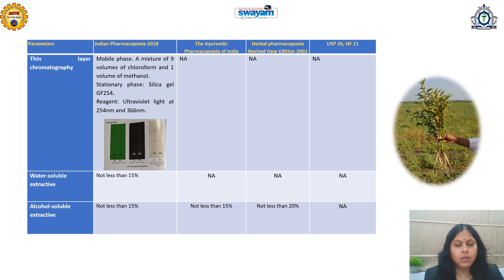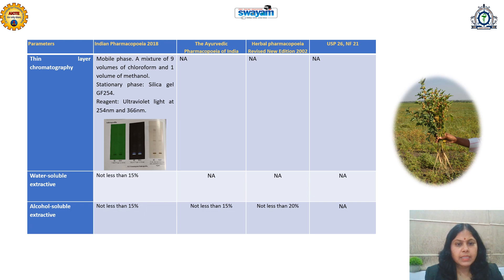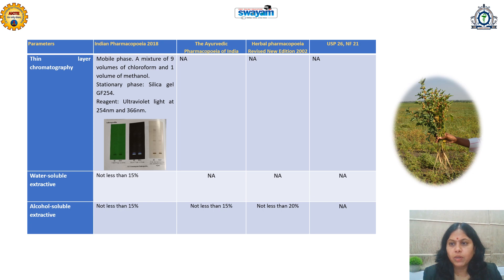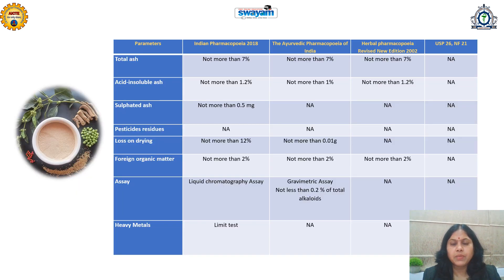The next parameter is water-soluble extractive value, which is mentioned only in the Indian Pharmacopeia and not in the Ayurvedic, Herbal, USP, or British Pharmacopeia. Alcohol-soluble extractive value — which should not be less than 15% — is mentioned in the Indian Pharmacopeia and Ayurvedic Pharmacopeia, while the Herbal Pharmacopeia specifies not less than 20%. Extractive values give an idea about different organic chemical constituents: water-soluble extractive values indicate polar constituents, while alcohol-soluble extractive values indicate semi-polar constituents.